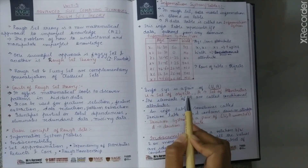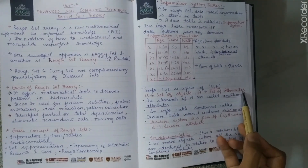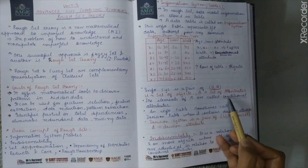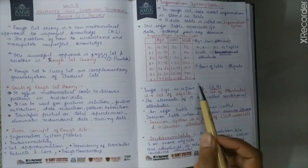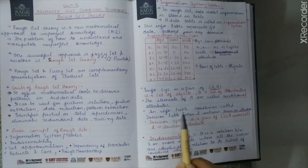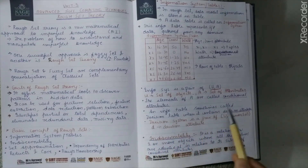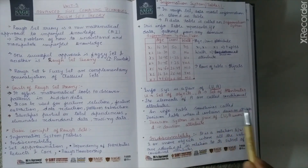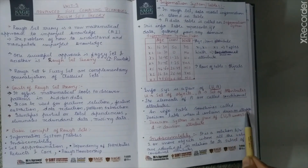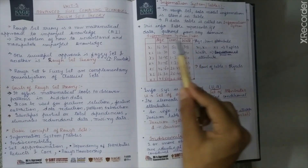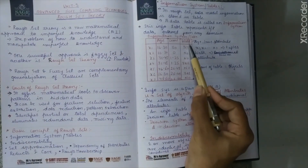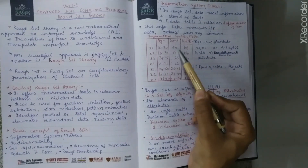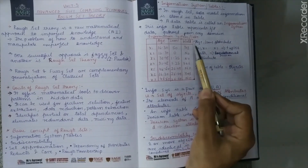U has a set of objects and A has a set of attributes. The elements of A are called conditional attributes. This information table is sometimes called a decision table — when we use decision attributes. Our information system is denoted (U, A), and if we have decision attributes, the decision system is denoted (U, A ∪ D), where D is our decision attribute.